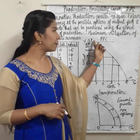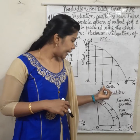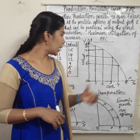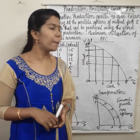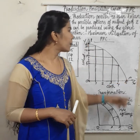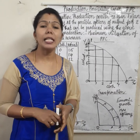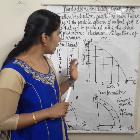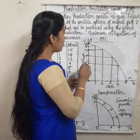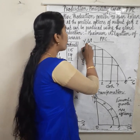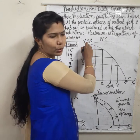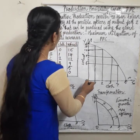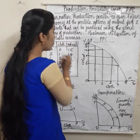Now this is our diagram — the PPC, production possibility curve. In this diagram, the x-axis represents cloth in meters and the y-axis represents wheat in kilograms. PP is our production possibility curve and it has a concave shape. In the first possibility, 15 units of wheat are produced with 0 units of cloth.